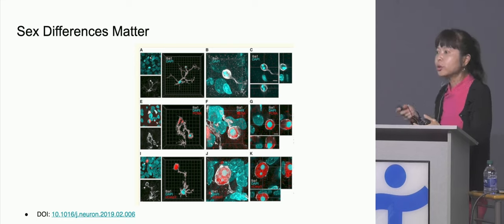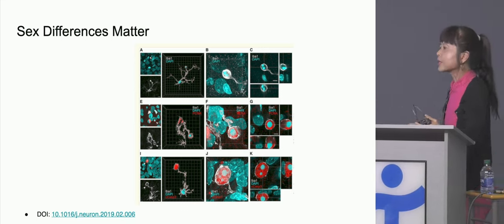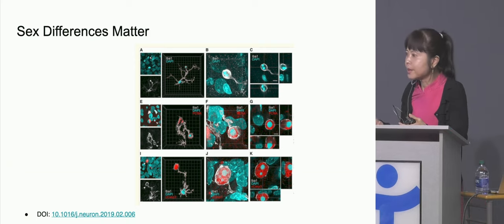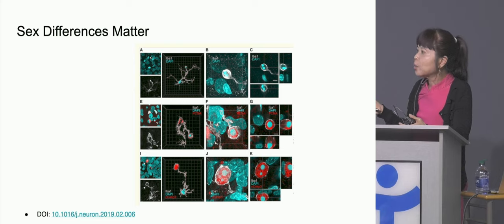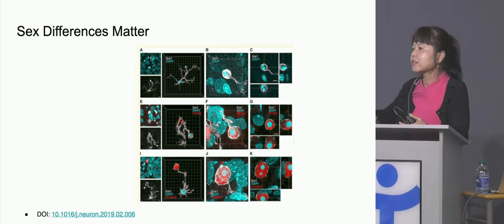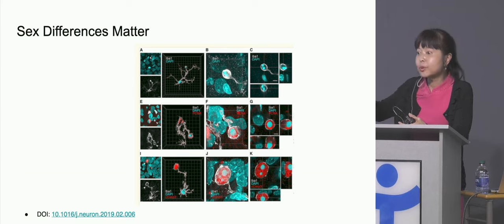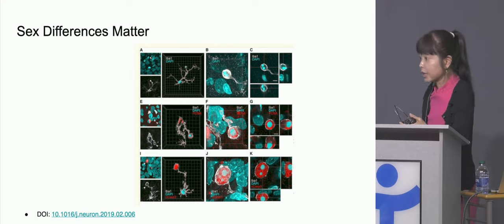Sex differences matter. Anytime you are talking about macrophages, you want to know — and if it's a good study, they will always tell you whether it's in males or females. This study was looking at play behavior in mice. Male mice have more aggressive ways of playing compared to female mice. They discovered that microglia in the developing brains of male mice were actually chomping away at newborn neurons — very aggressive pruning in the amygdala — and that was causing that aggressiveness in play. That didn't happen in female mice, but if they manipulated the microglia to do that pruning in females, you would then see aggressive play behavior. So behavior can be influenced by microglia and how they prune your brain.